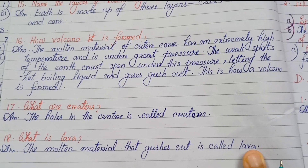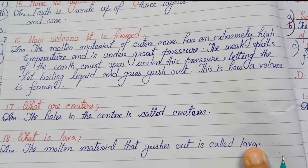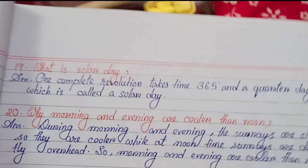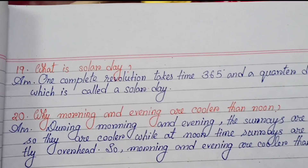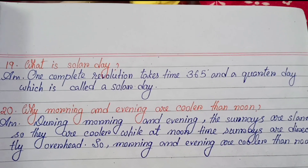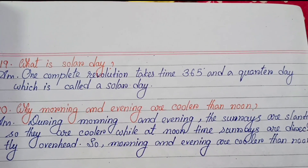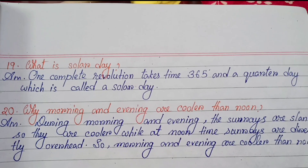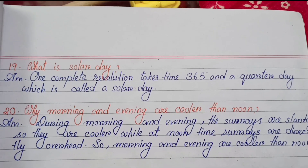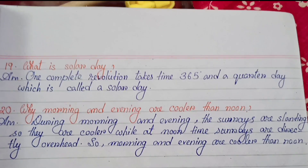The weak spots of the earth's crust let the hot boiling liquid and gases gush out — this is how a volcano is formed. Number seventeen: What are craters? The hole in the center is called a crater. Number eighteen: What is lava? The molten material that gushes out is called lava. Number nineteen: What is a solar year? One complete revolution of the earth around the sun takes 365 and a quarter days, which is called a solar year.